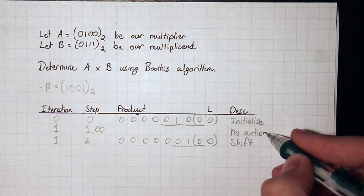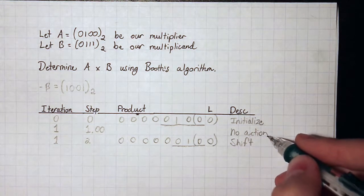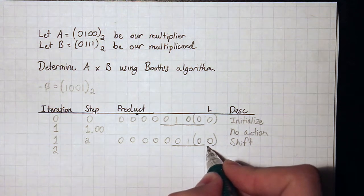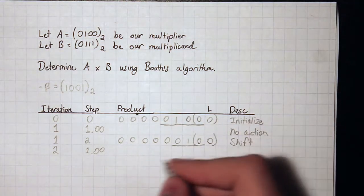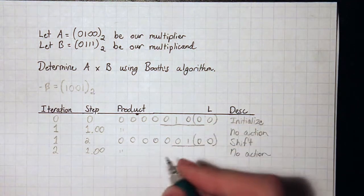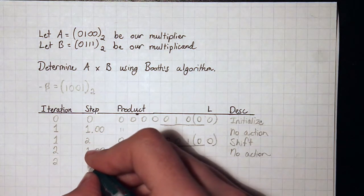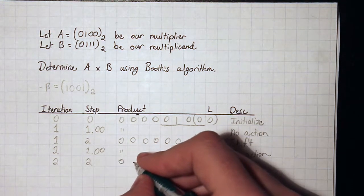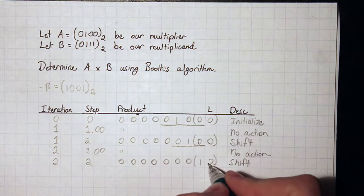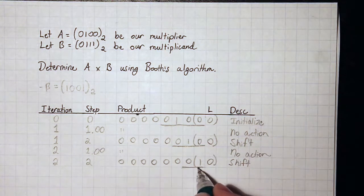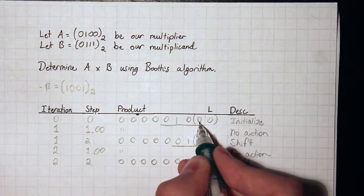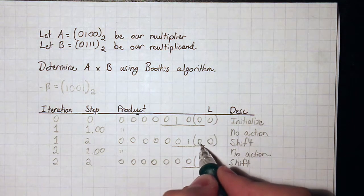Iteration 2 is very similar to iteration 1 because we have the same sequence of zeros. Step 1.00 — no action, since both bits are the same. For step 2, we shift in another 0. We re-underline the multiplier. On the next iteration, the 1 from the multiplier will be in our last bit, because the last bit stores whatever was shifted out of the rightmost position of the product register.